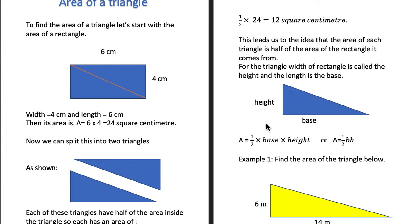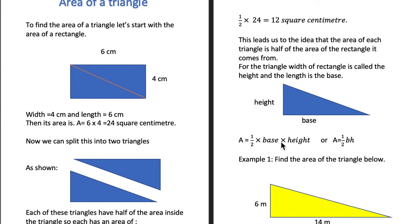Now if you look at this triangle, this side is the same as the length of the rectangle because this triangle is coming from that rectangle. In a rectangle we call this dimension 'length,' but in the triangle it is called 'base.' So the base of the triangle is the same as the length of the rectangle. And the width of the rectangle will be called 'height' in the triangle. So this height is the same as the width, and the area of this triangle is half times base times height.